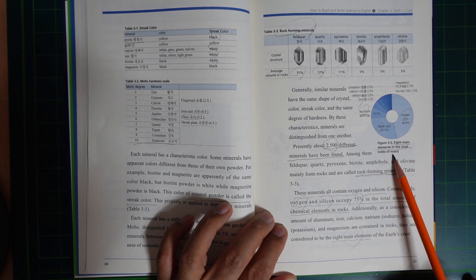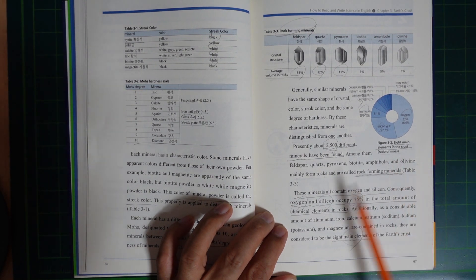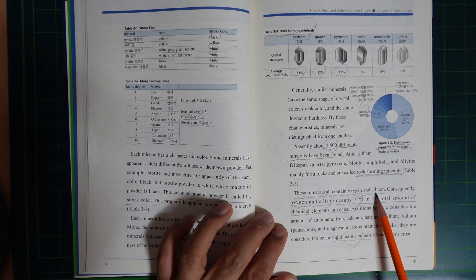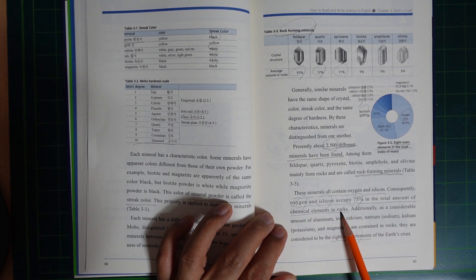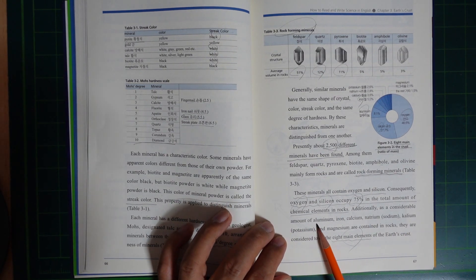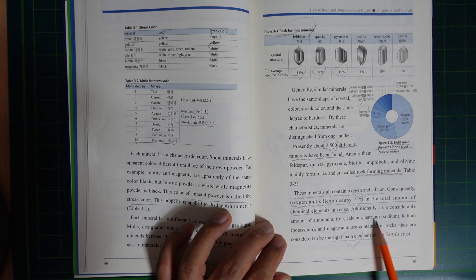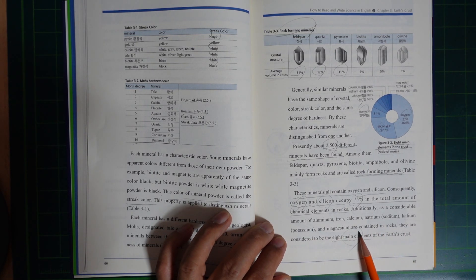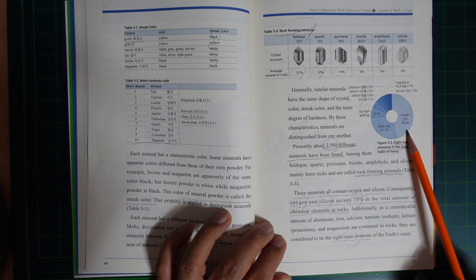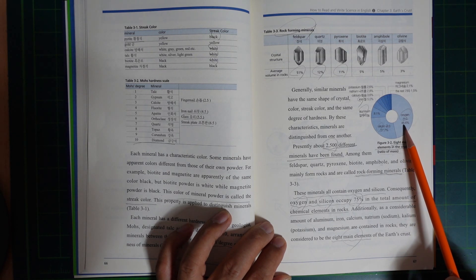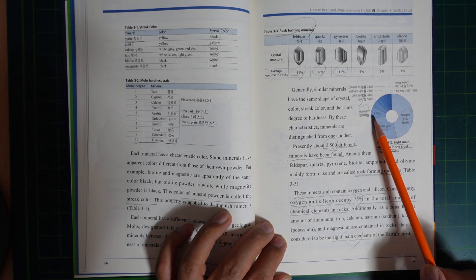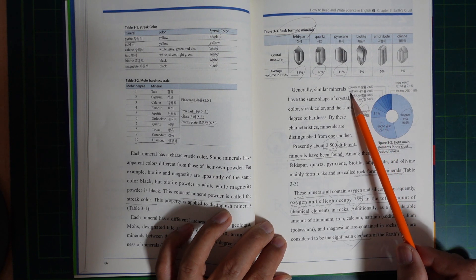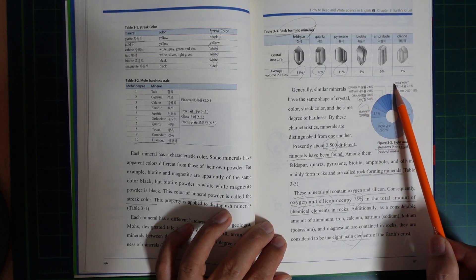Eight main elements in the crust. These minerals all contain oxygen and silicon. Consequently, oxygen and silicon occupy 75% in the total amount of chemical elements in rocks. Additionally, a considerable amount of aluminum, iron, calcium, natrium or sodium, kalium or potassium, and magnesium are contained in rocks. They are considered to be the eight main elements of the Earth's crust: oxygen 46%, silicon 27%, aluminum 8%, iron 5%, calcium, natrium, potassium, magnesium, and the rest.